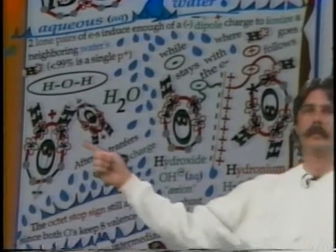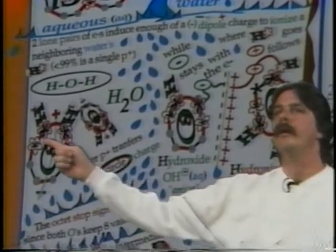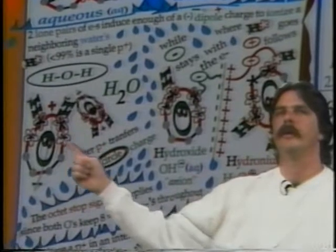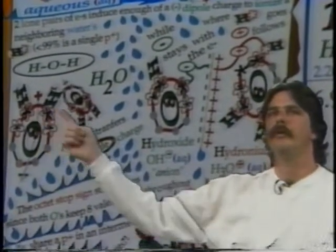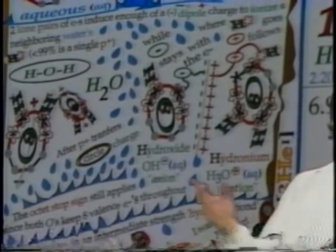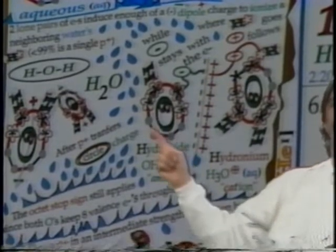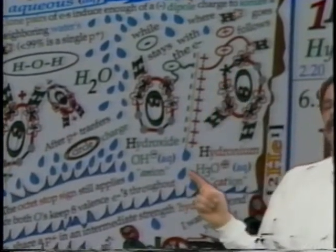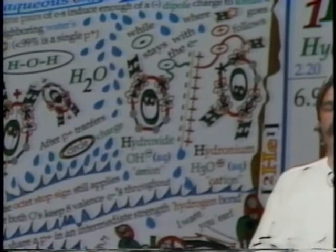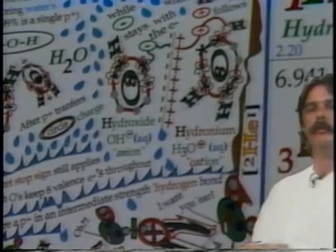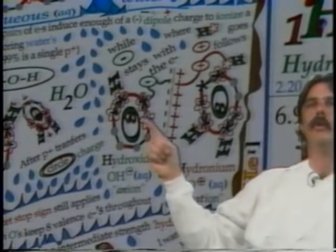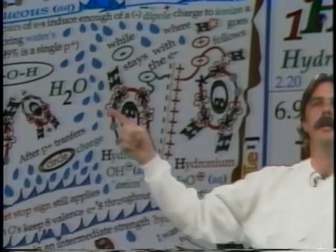Continuing with covalent bonding, oxygen needs two more electrons for eight. Hydrogen has one electron available, so one hydrogen's electron can fill one empty space and another fills the second, giving oxygen its octet. The two protons are positively charged on one side of the water molecule, and with the lone pairs of electrons on oxygen, they can actually strip away one of the protons. Oxygen, being more electronegative, keeps the octet of electrons.